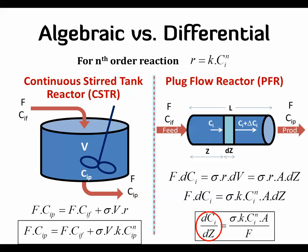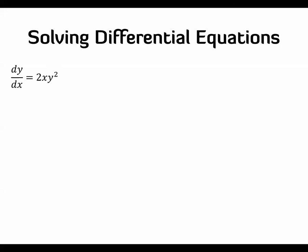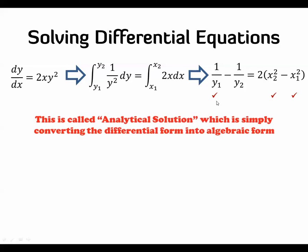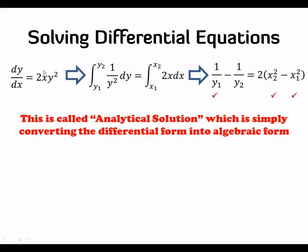The difference here is how we solve the differential equation. In high school mathematics, if you have a separable differential equation, you can separate the variables — x on one side, y on the other — apply limits of integration, integrate, and get an algebraic result. If you know Y1, X1, and X2, you can calculate Y2. This is an analytical solution, converting the differential form to an algebraic form, valid for any values.